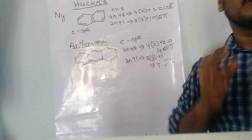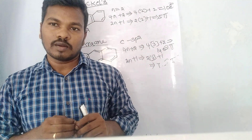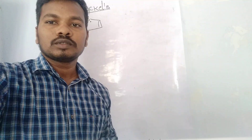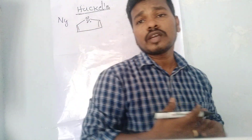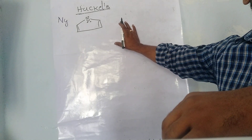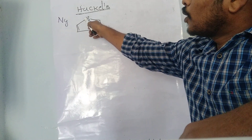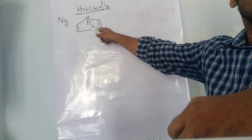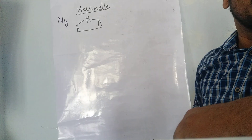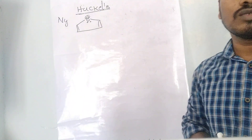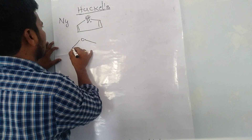Now, what about furan? Furan is also called an aromatic compound. Why is it aromatic? Looking at the furan structure, it contains an oxygen atom. One of the lone pairs of electrons in the oxygen atom is delocalized into the ring. The oxygen atom is sp2 hybridized, and one of its lone pairs is in the p orbital, creating a cyclic pi system with 6 electrons. This lone pair acts as a pi bond contributing 2 pi electrons.